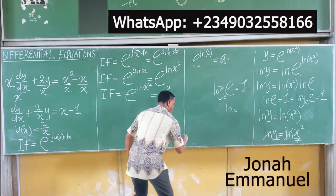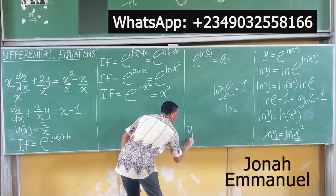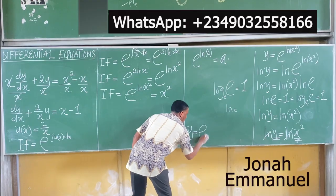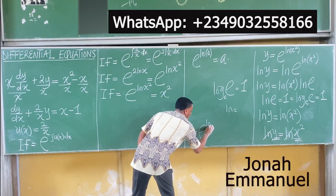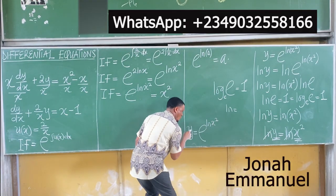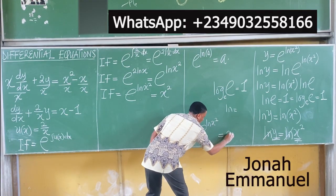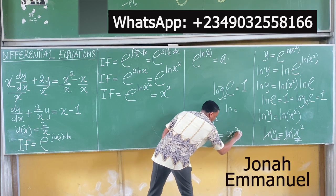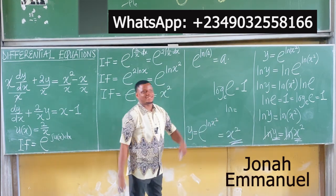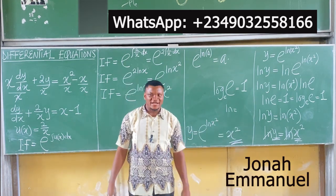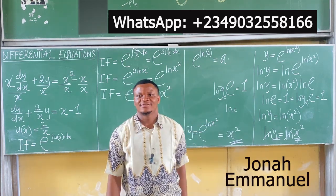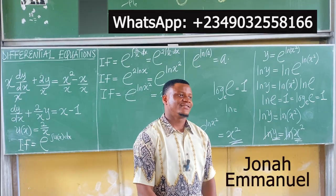So I'm saying that if y equals e to the power of ln x squared, this same y, as you can see, is equal to x squared. That's mathematics, not math magic — I talked about this thing. Makes sense!